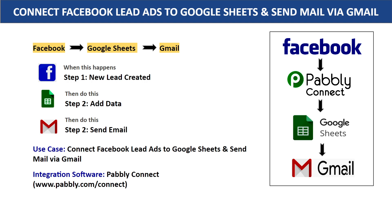So here you have two choices. The first choice is to copy all the details of John from Facebook, sort it out, add him as data in Google Sheets, and also manually send him an email via Gmail. Now this process is actually very repetitive and tiresome. I would suggest you bring in some automation so that whenever a new lead is created in Facebook, it automatically adds data into Google Sheets and also sends an email. In this video we will be using Pabbly Connect to integrate Facebook, Google Sheets, and Gmail. The best part is there is no need for coding skills or programming knowledge.